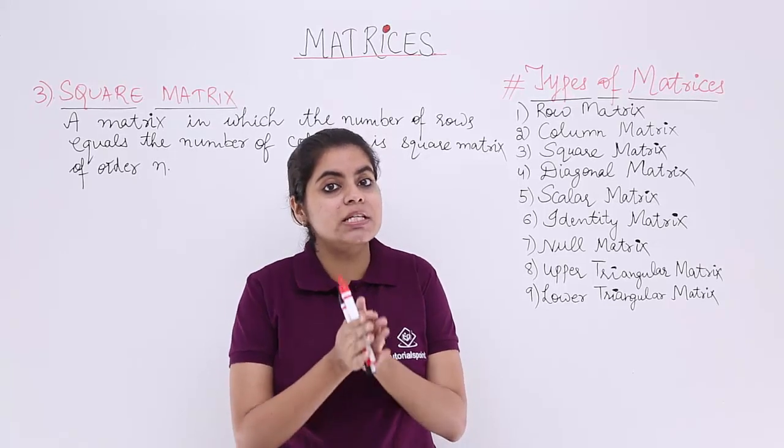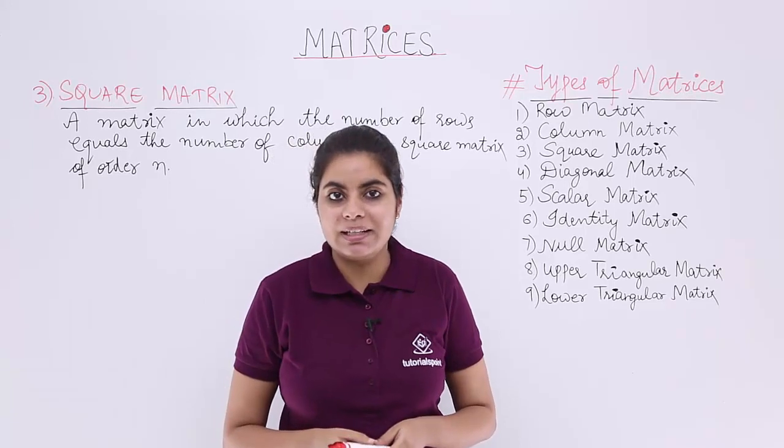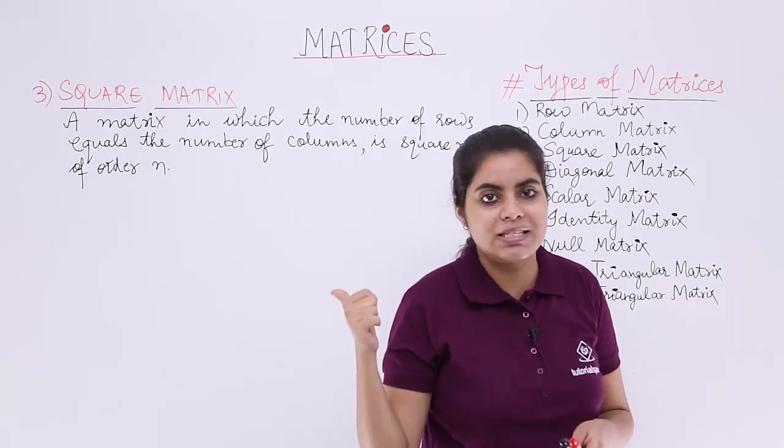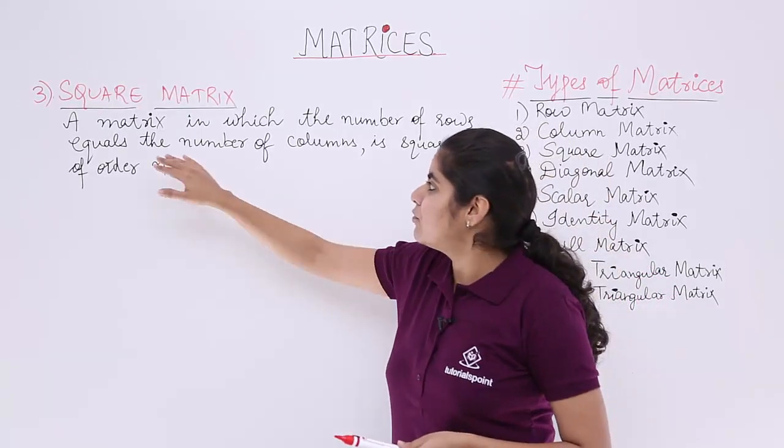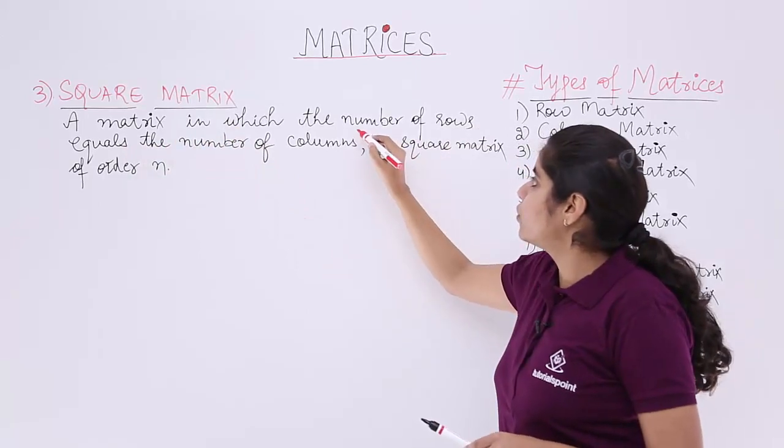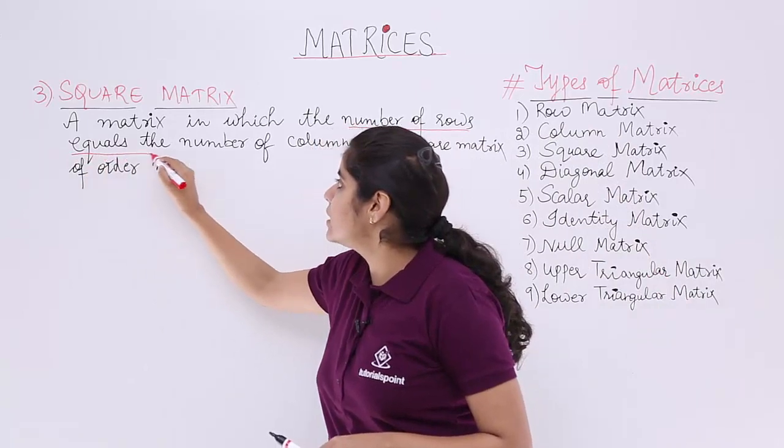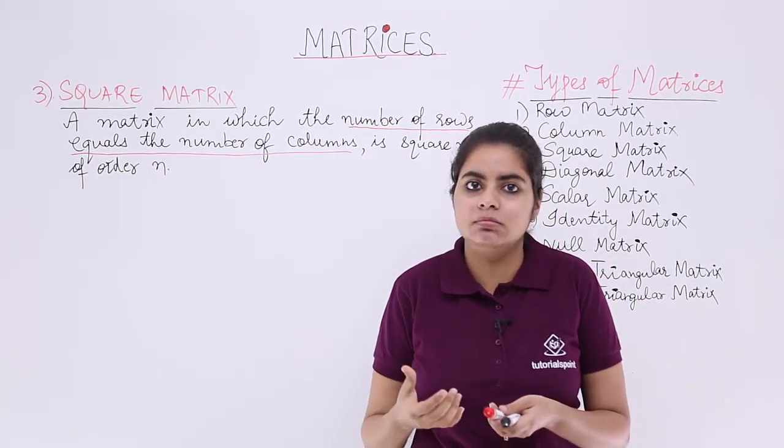Now, this video focuses on square matrix. Square matrix is another important category. Let's read out the definition aloud. The definition says a matrix in which the number of rows equals the number of columns, that means the number of rows and columns are same. They are equal.